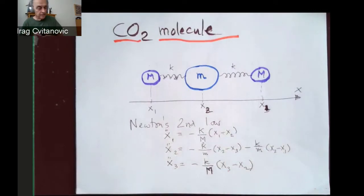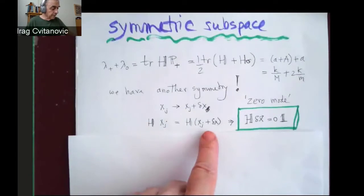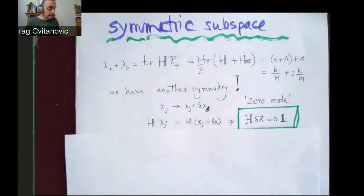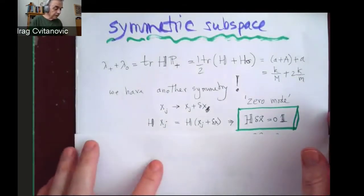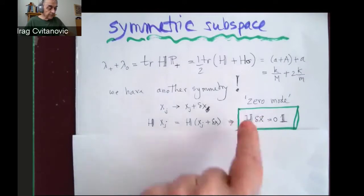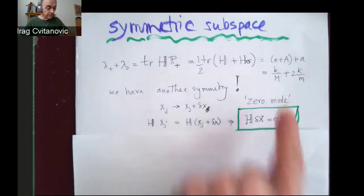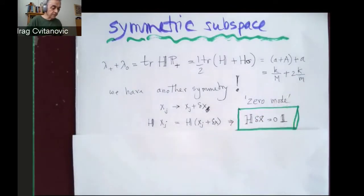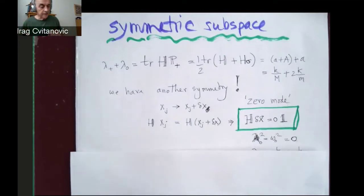Because remember what the Hamiltonian is. It's dependent on the pairwise distances between particles. It didn't depend on if I change them all by the same amount. Measured in any translated coordinate, these two parts are the same.